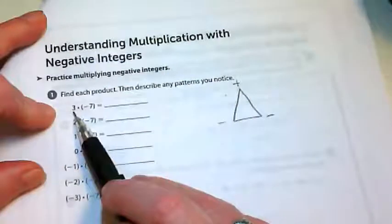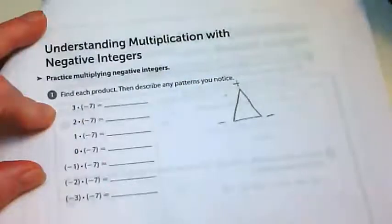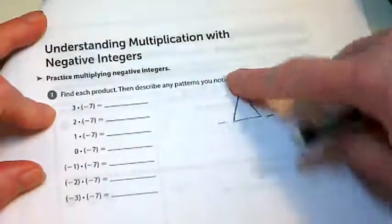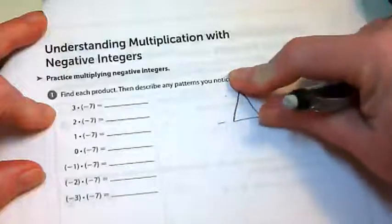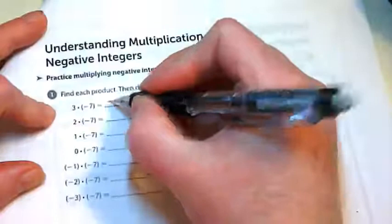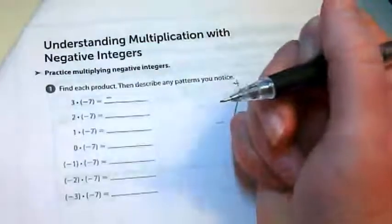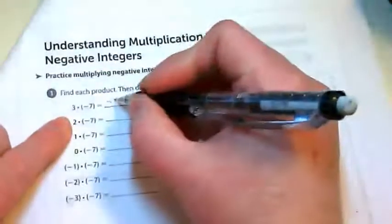So if I multiply a positive times a negative, I end up with a negative. And if I cover up the positive and I cover up a negative, I'm left with a negative. That means the answer to this is going to be negative. And then I just use regular multiplication, 3 times 7 is 21.